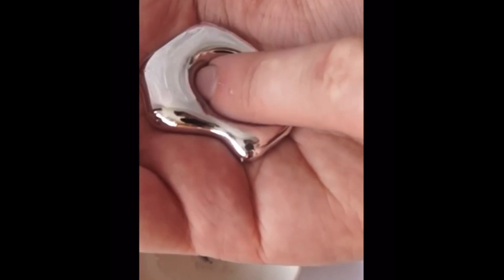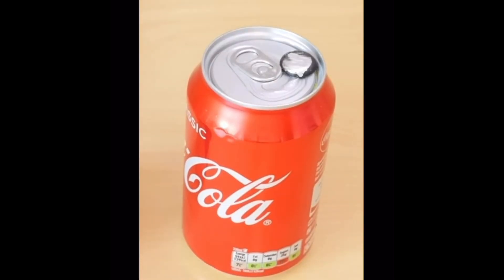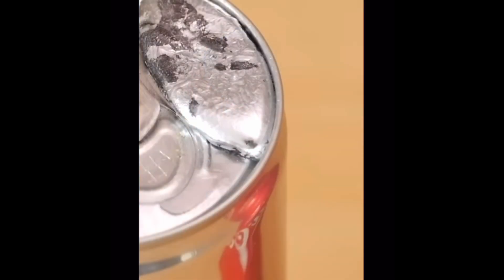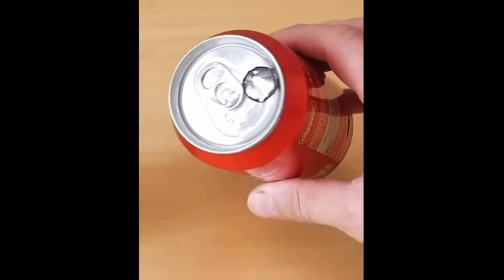Gallium is soft, silvery and non-toxic, making it safe to handle. But don't be fooled, it can do some real damage to aluminium. When gallium meets aluminium, it seeps into the metal, weakening its structure. Over time, it destroys the can completely.